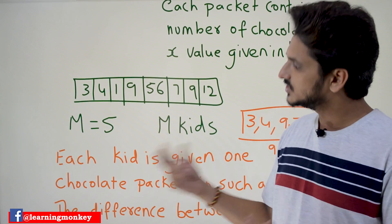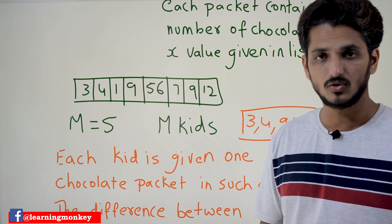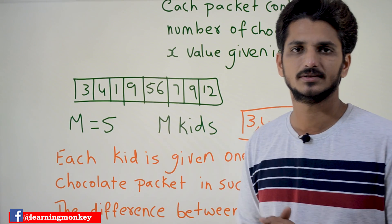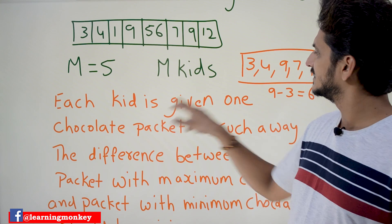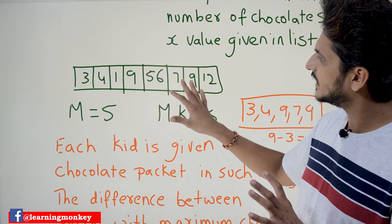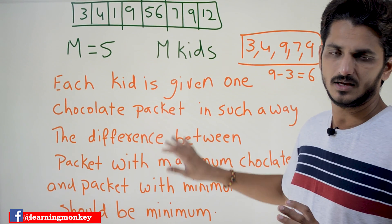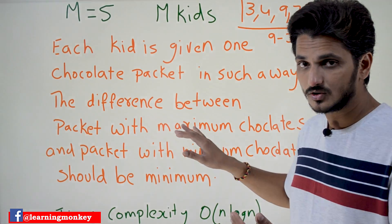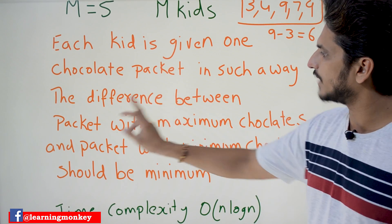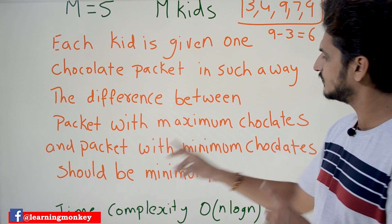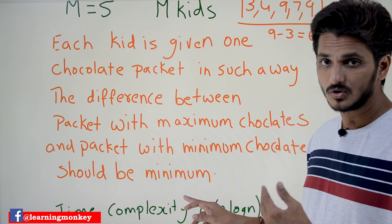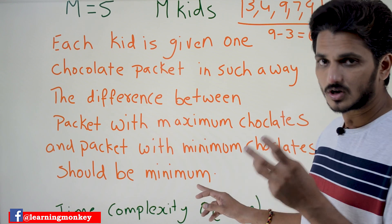Coming to the next input, they are going to provide you m is equal to 5. m value shows m number of kids. The question here is: each kid is given one chocolate packet. We have to give one chocolate packet for each kid in such a way that the difference between the packet with maximum chocolates and the packet with minimum chocolates should be minimum.